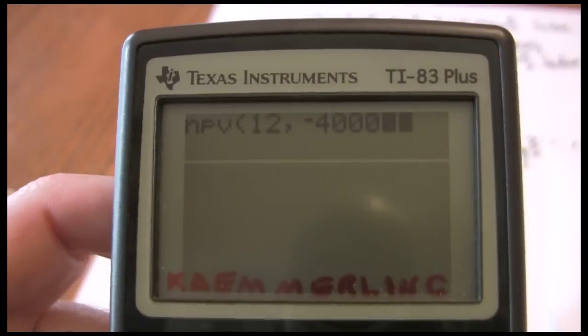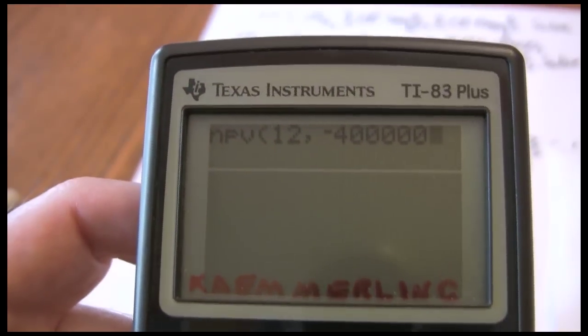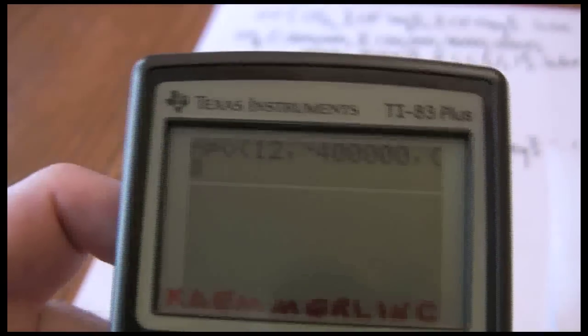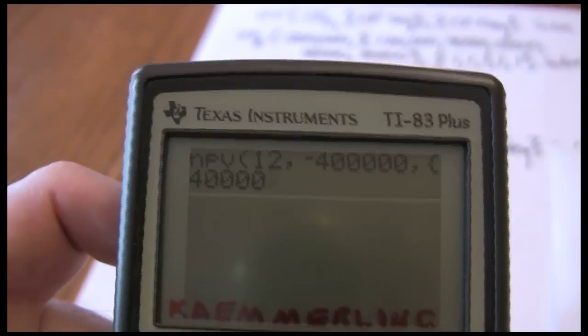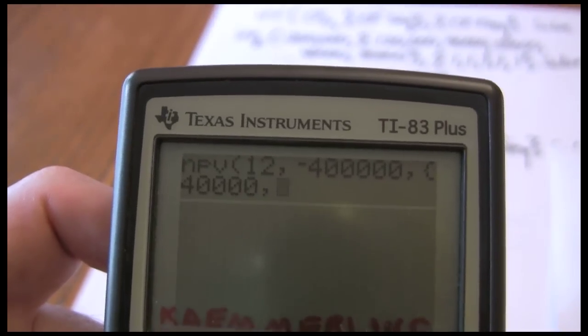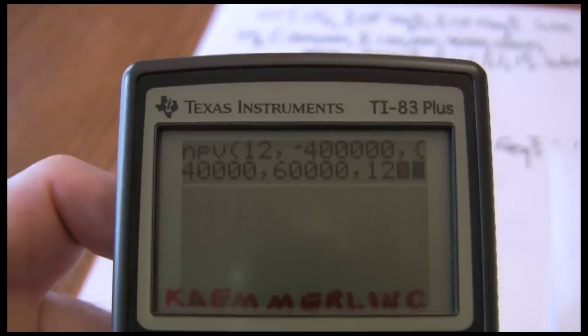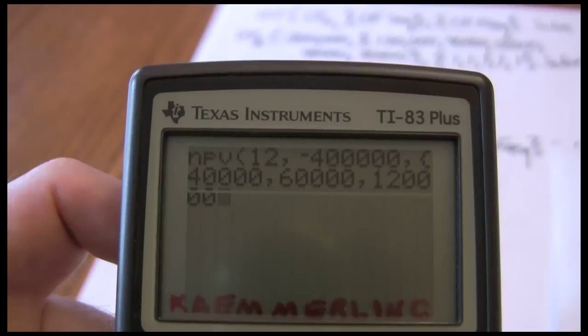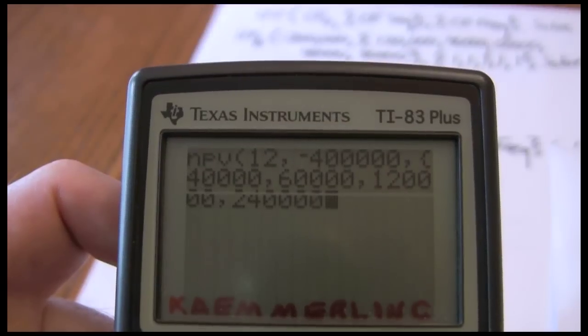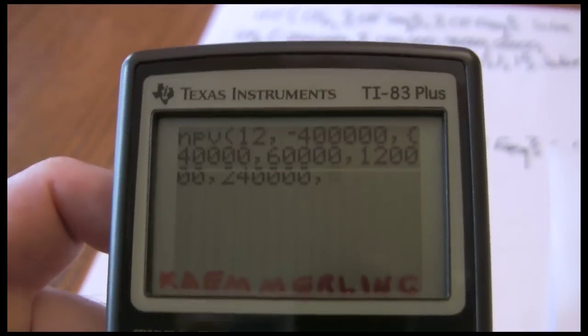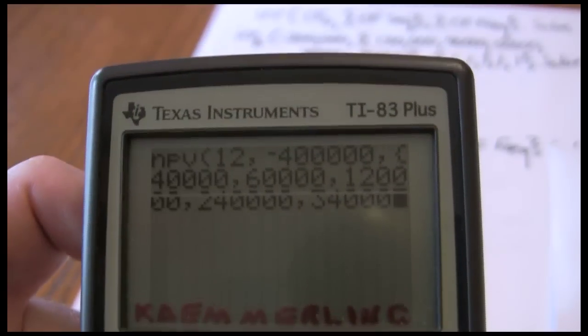Cash flow sequence: $40,000, $60,000, $120,000, $240,000, and last one in the sequence, $340,000. Once I get those in, close my bracket.